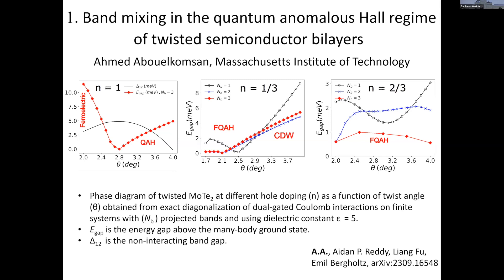At filling one, for example, there's a quantum anomalous Hall effect, and also there are some competing states like ferroelectric states at small twist angles. At two-thirds and one-third filling there is the interplay between the fractional quantum anomalous Hall states and charge density wave states. So very briefly we look at band mixing effects on the resulting phases in twisted TMD bilayers.